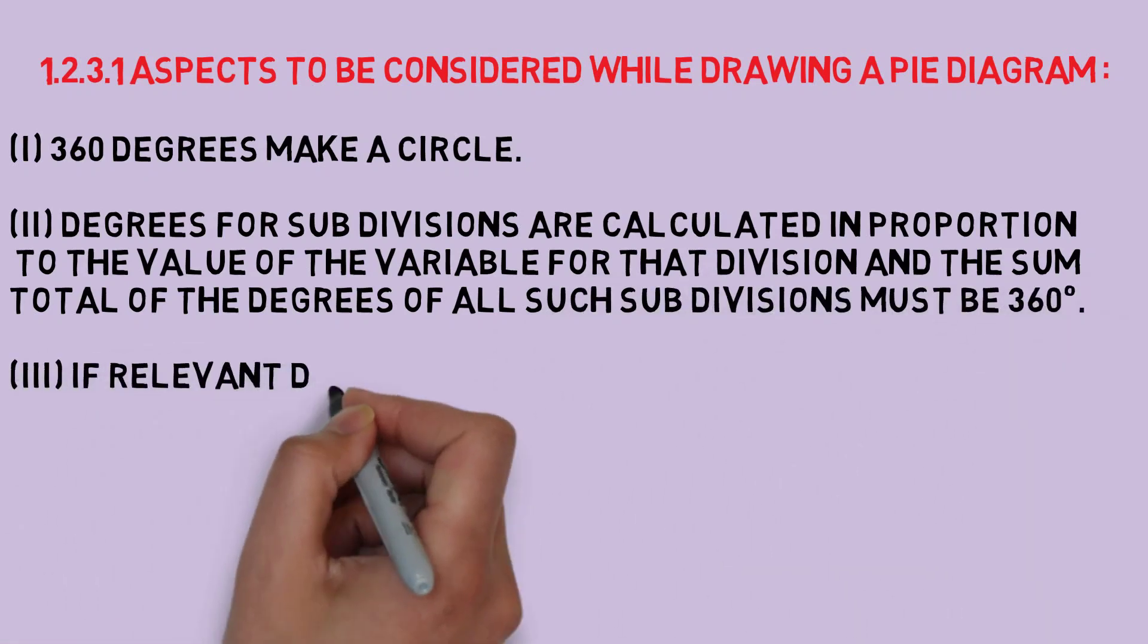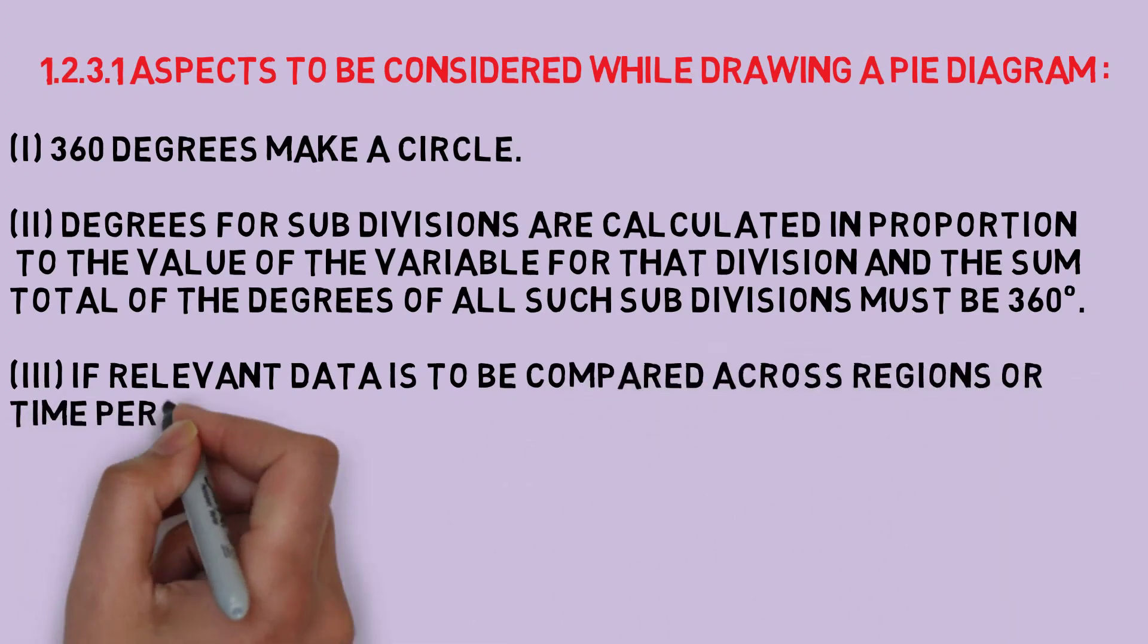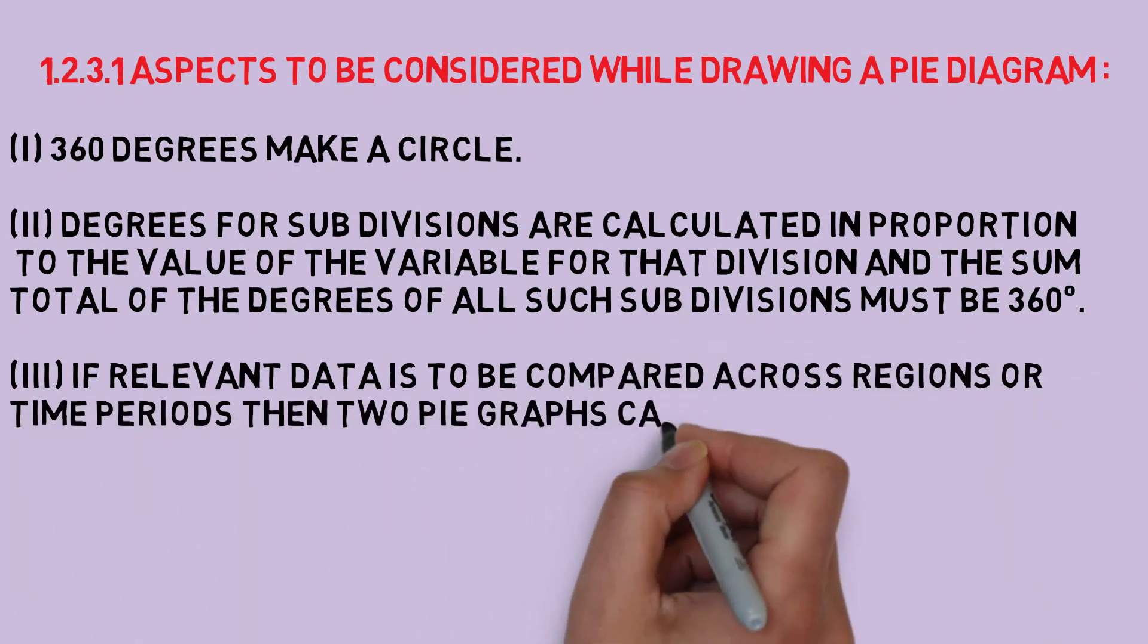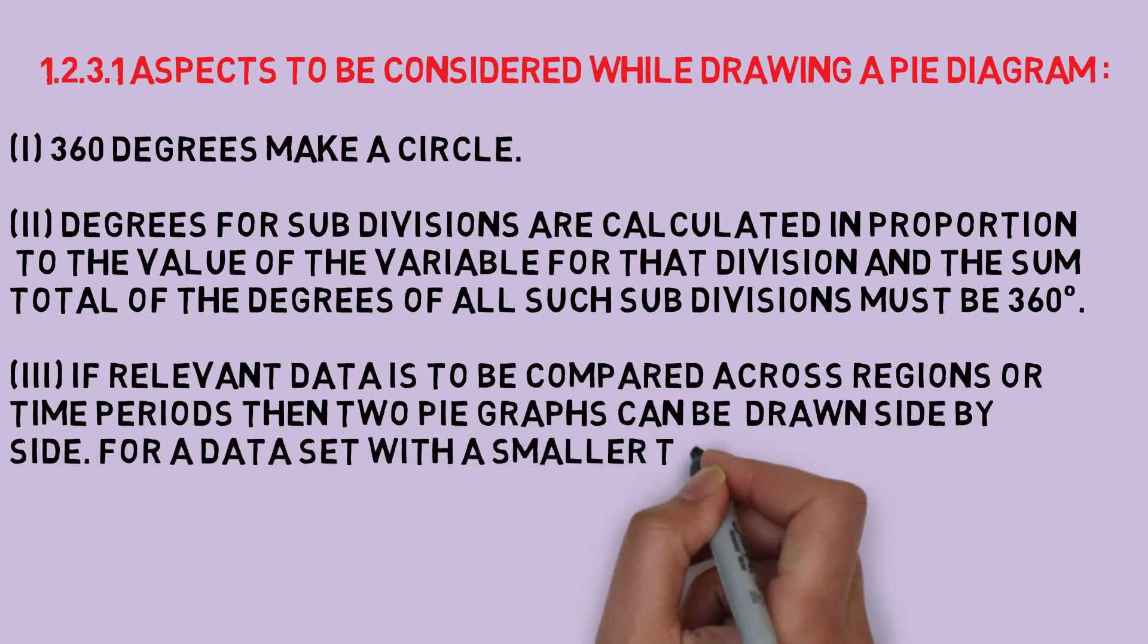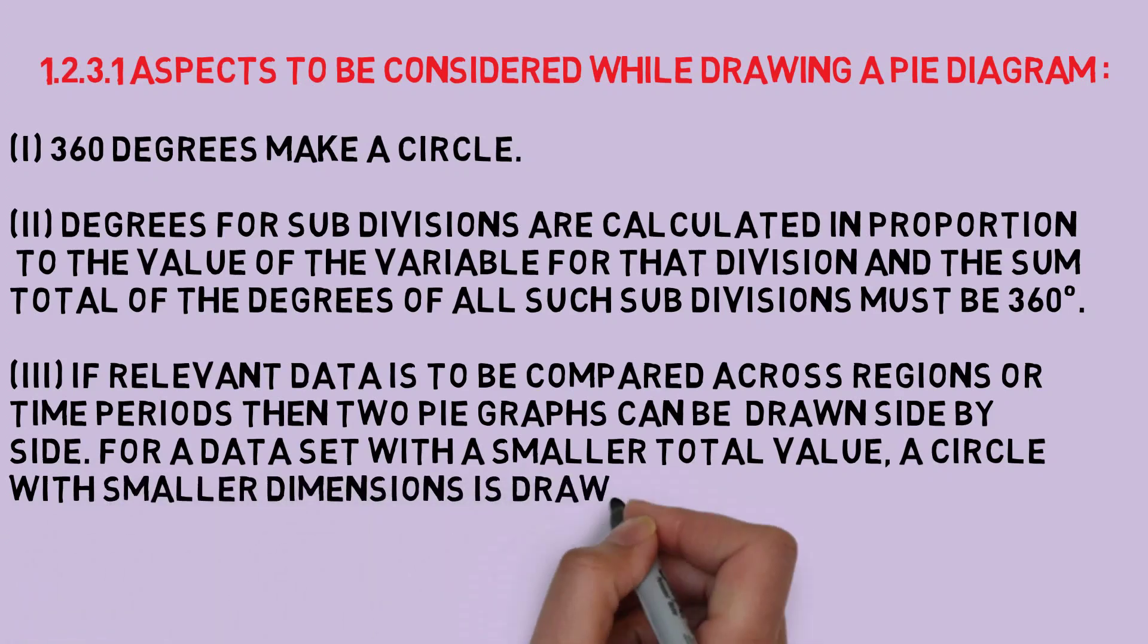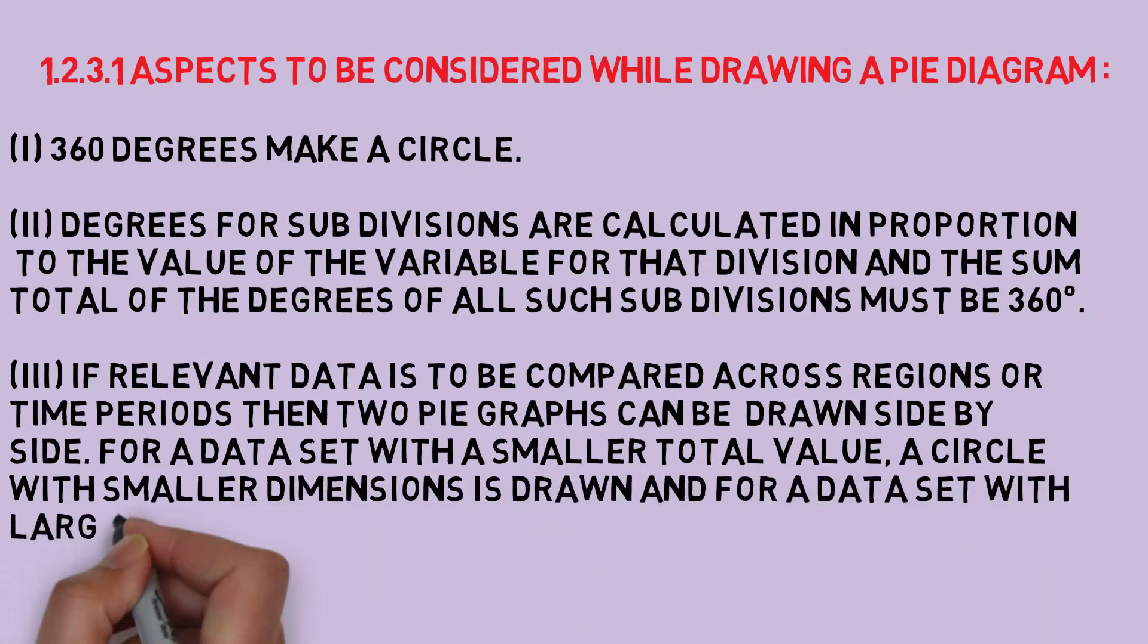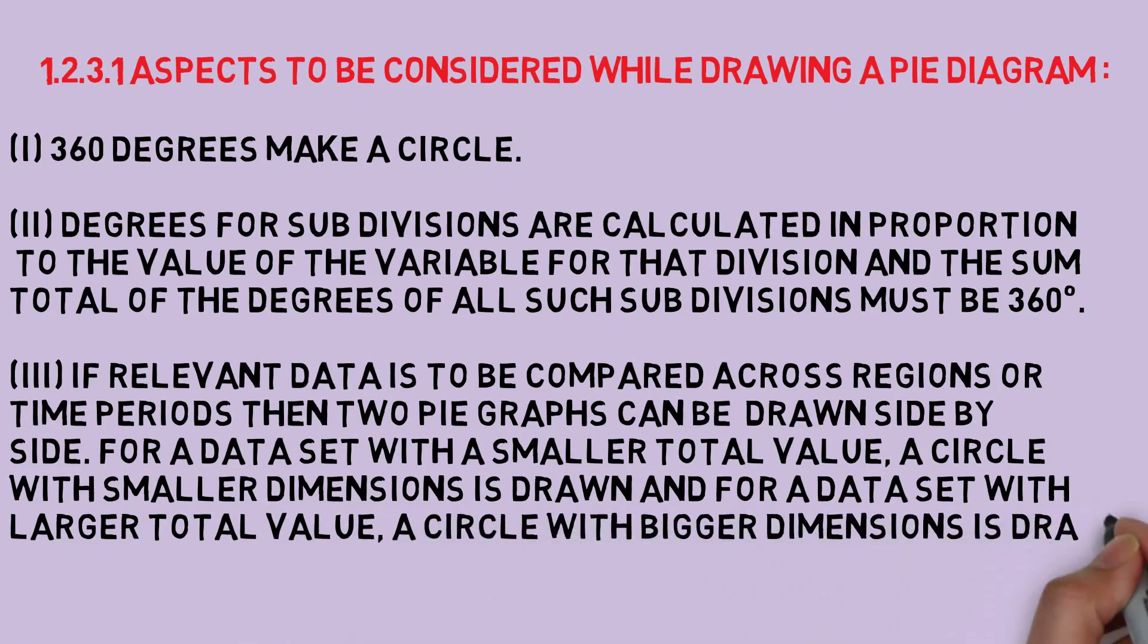Number three: if relevant data is to be compared across regions or time periods, then two pie graphs can be drawn side by side. For a data set with a smaller total value, a circle with smaller dimensions is drawn, and for a data set with larger total value, a circle with bigger dimensions is drawn.